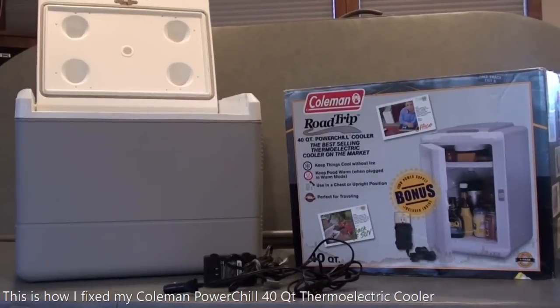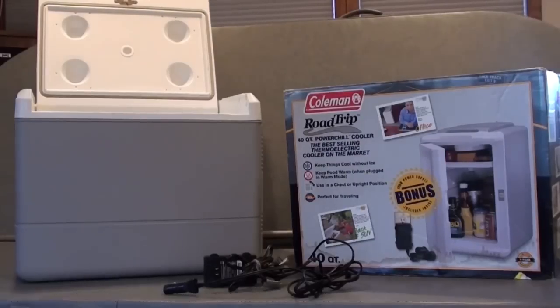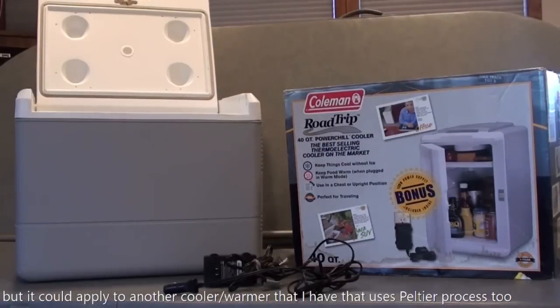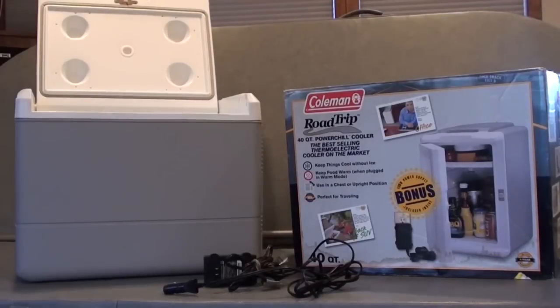This is Howdy Do It. I'm going to talk today to you about the Coleman Road Trip 40-Quart Power Chill Cooler. It's a great little unit. I've had it for over 10 years. I've only used it for cooling, but you can flip the cord between red and blue. Red means it's a warming unit. Blue means it's a cooling unit.